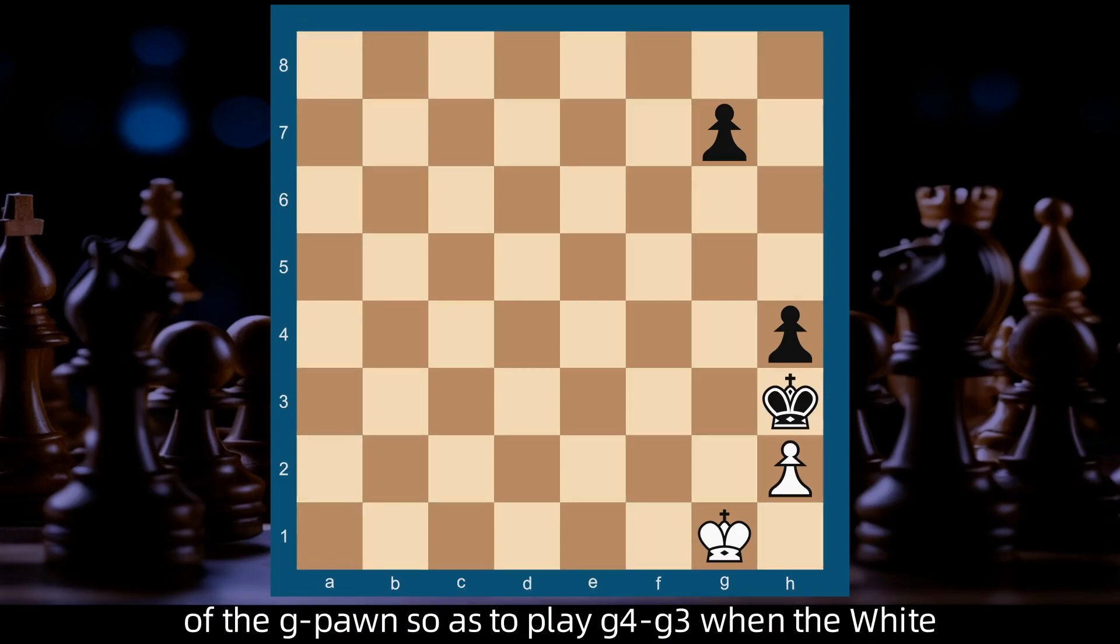The third part will consist in timing the advance of the g pawn so as to play g4, g3 when the White king is at h1.